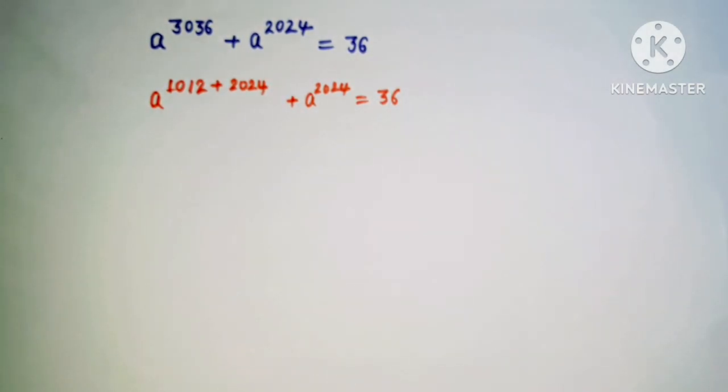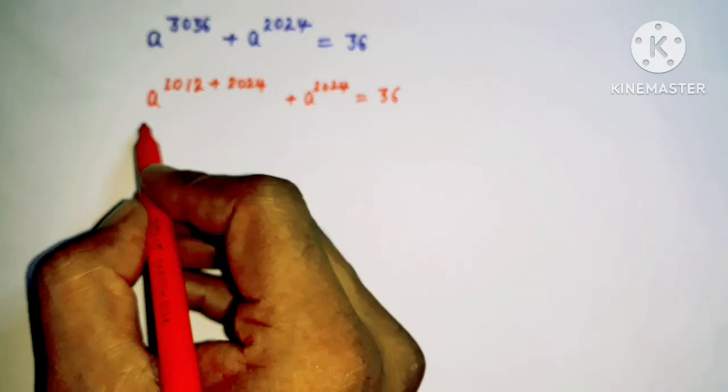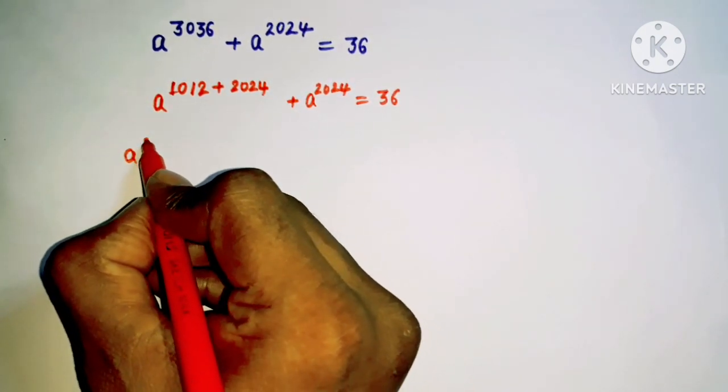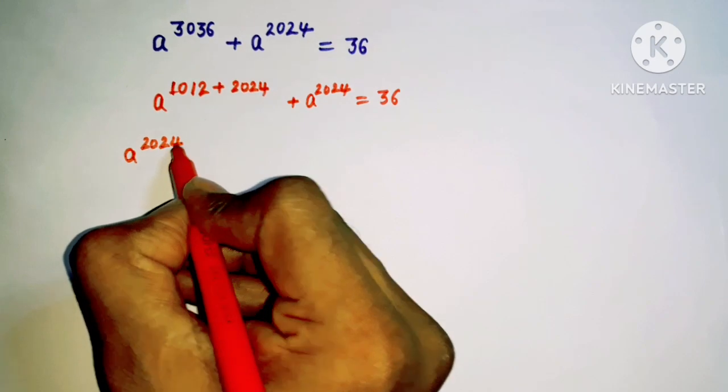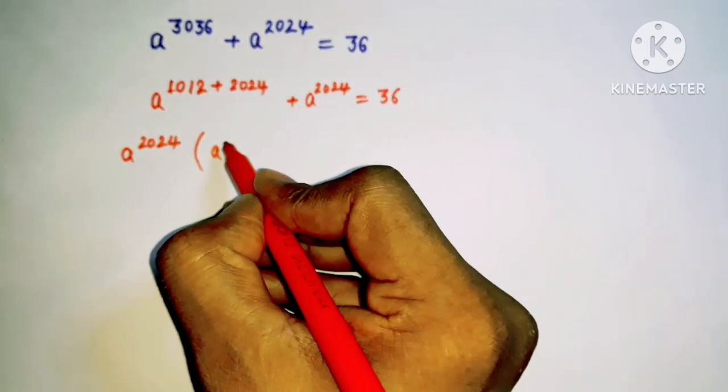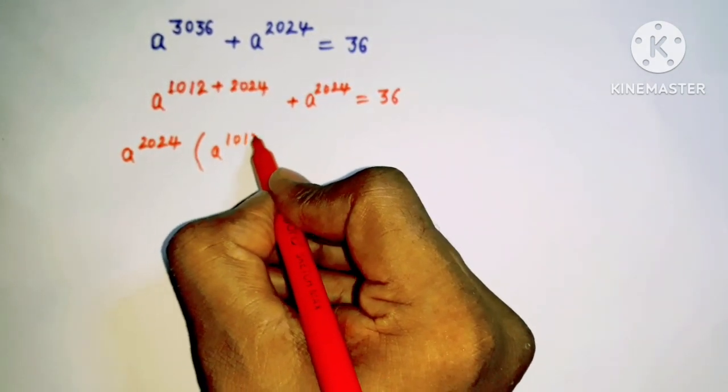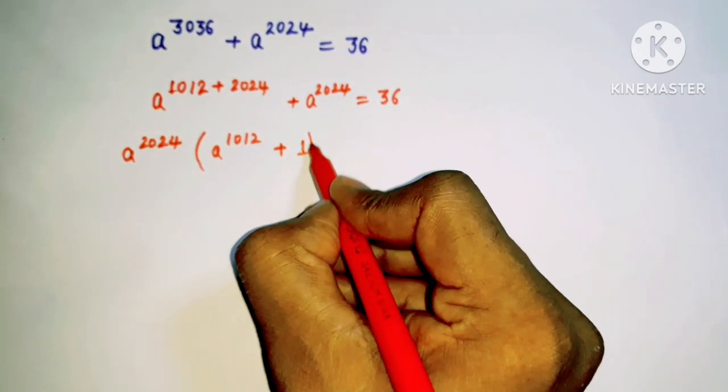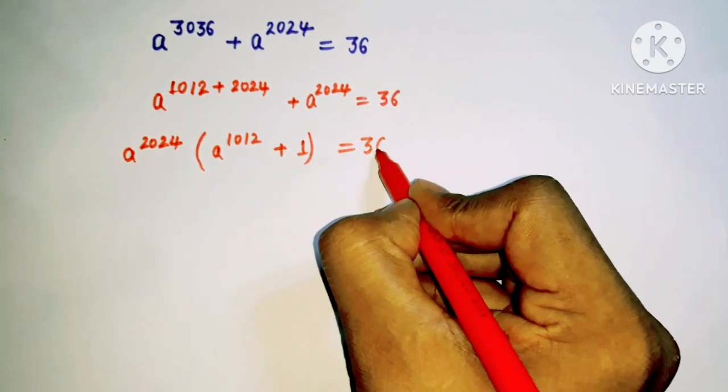Now I can easily extract the common from both here. This is giving us a to the power 2024, and we have remaining here a to the power 1012 plus 1, and here 36.